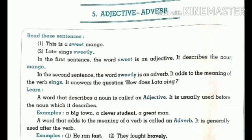In the second sentence, the word 'sweetly' is an adverb. It adds to the meaning of the verb 'sings.' Adverb explains how, when — these are the questions whose answers we get from adverbs in a sentence. We use adverbs to answer questions like 'how,' 'when,' and 'where.'